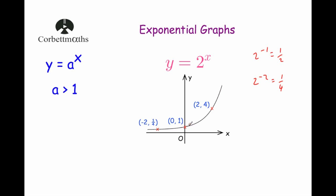So the graph would look something like this. If you had y equals 3 to the power of x, it would look very similar — it would still cross the y-axis at 1, it would still increase rapidly on the right-hand side, but slightly more rapidly because we're using 3. On the left-hand side, it would still decrease and approach 0, actually a bit quicker than y equals 2 to the power of x. So if you have y equals a to the power of x and a is any number bigger than 1, it would look something like this.